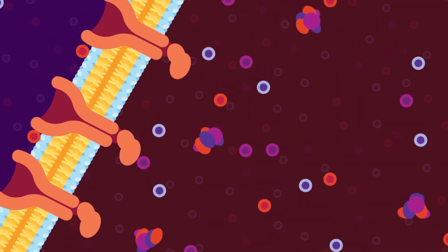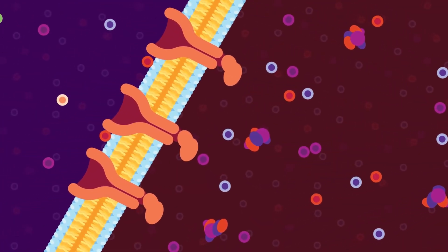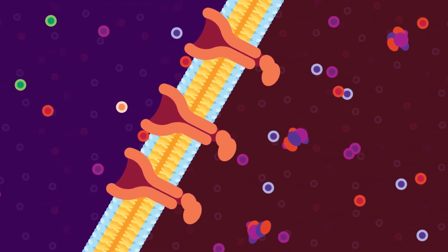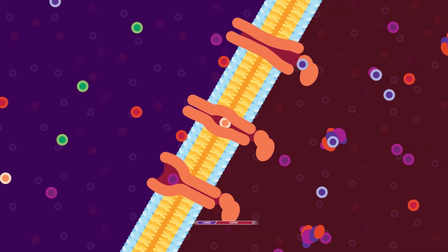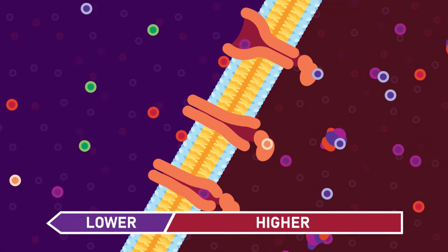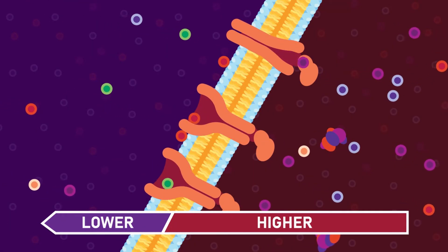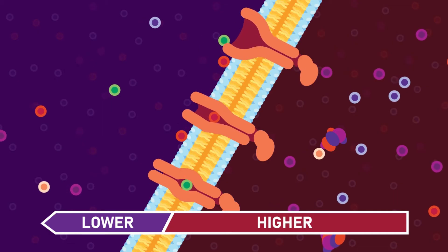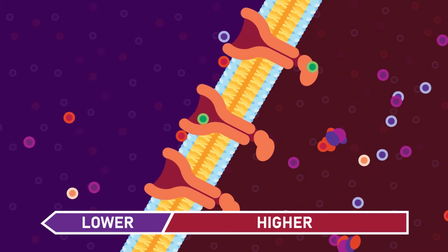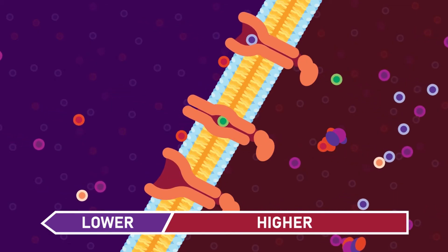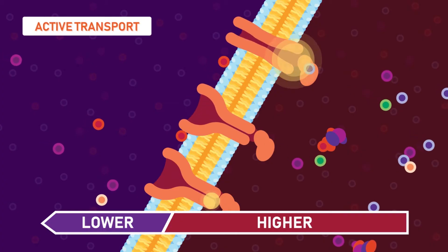Generally, the mineral ion concentration inside the cell can be higher than the surrounding soil. In this case, the ions move against the concentration gradient — that is, from lower concentration to higher concentration. This movement is termed active transport and requires energy.